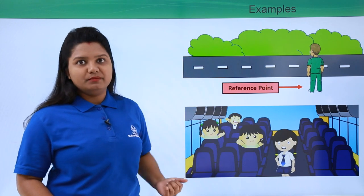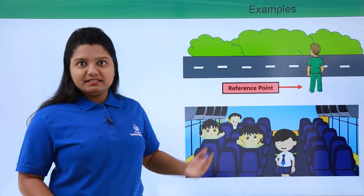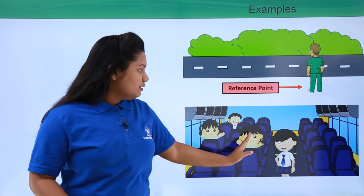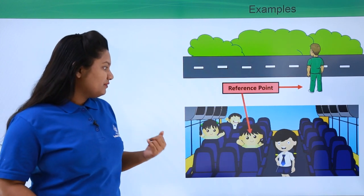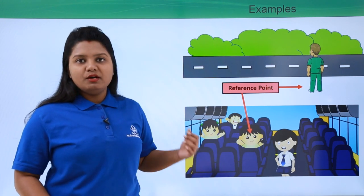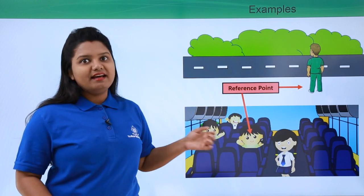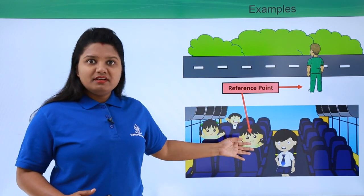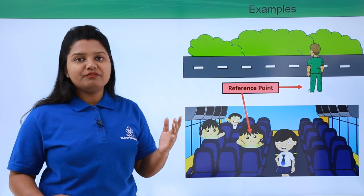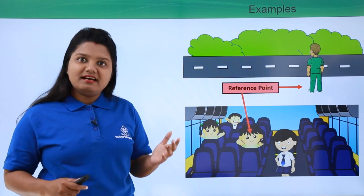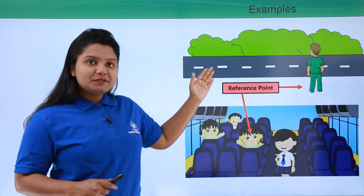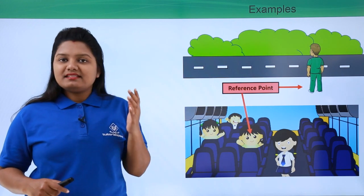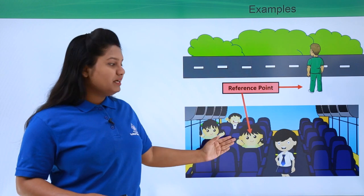Now consider the same situation from inside the bus. We take a seat and observe the kids inside. If we take the position of one of these kids as our reference point, from this perspective the other kids appear to be at rest — they are sitting near us and not moving. From this viewpoint, the children inside the bus are at rest in their respective places. So there are two different perspectives for the same situation.